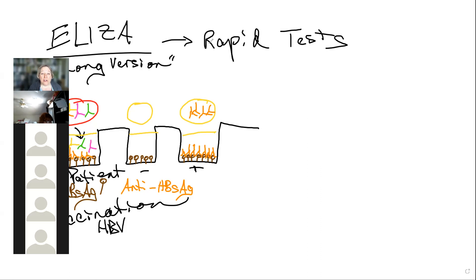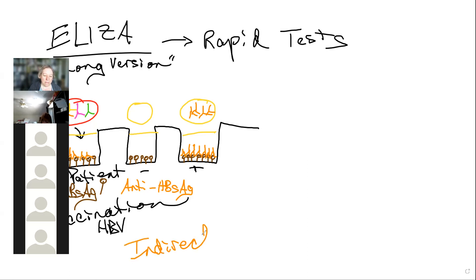After the antibodies have had time to bind, we wash the wells to remove any unbound antibody. Now here's the enzyme-linked part. I'm doing an indirect ELISA as the example because it's what most labs use — the direct method is more expensive and was mainly used early in development.